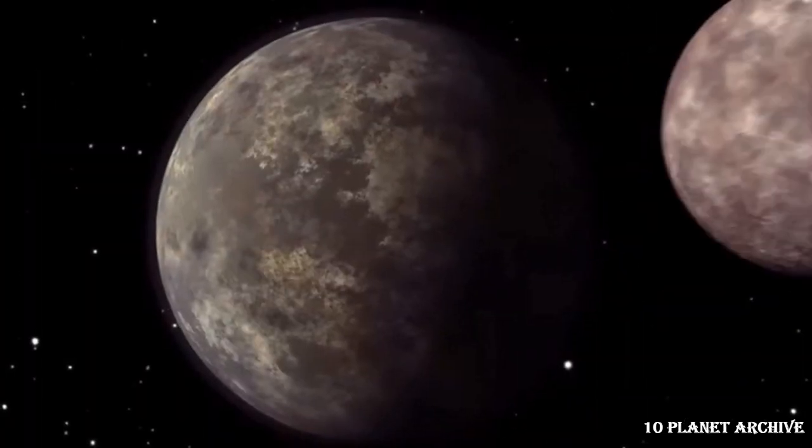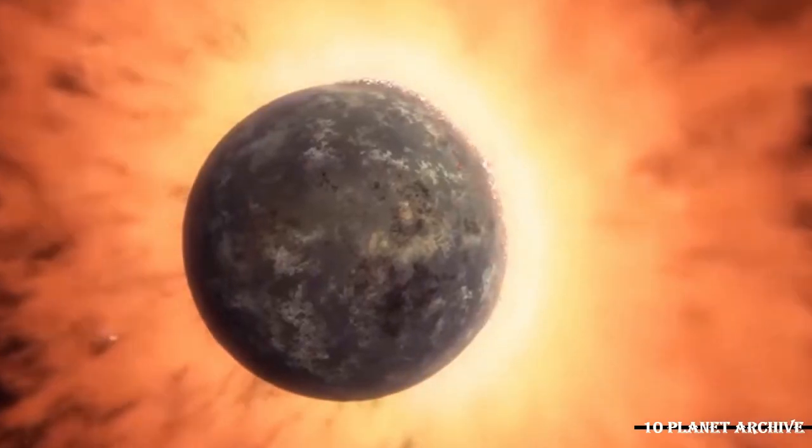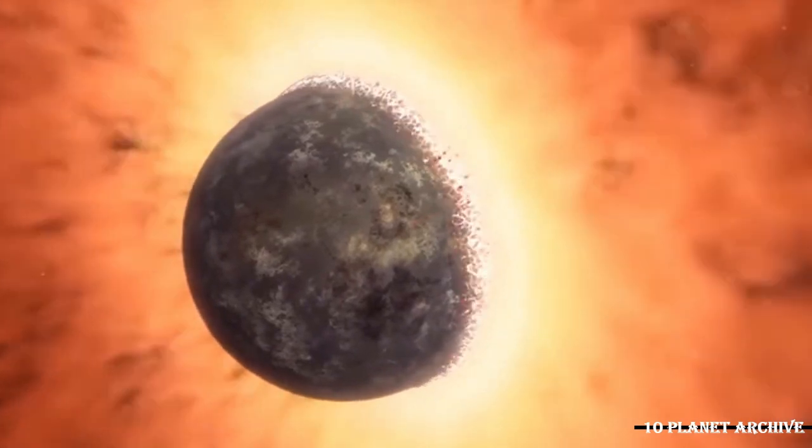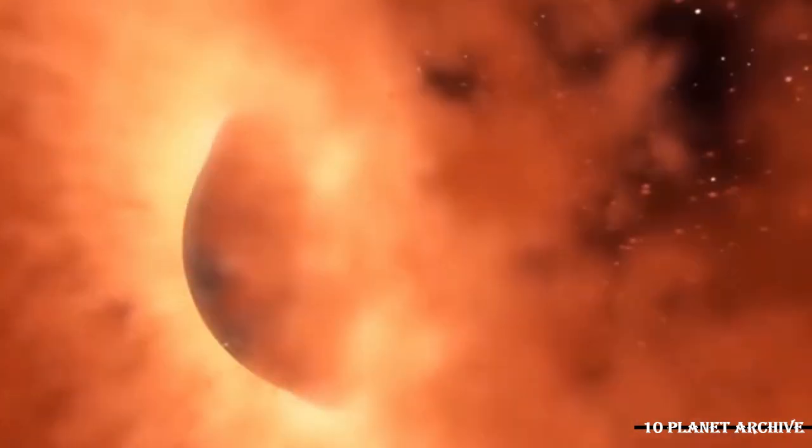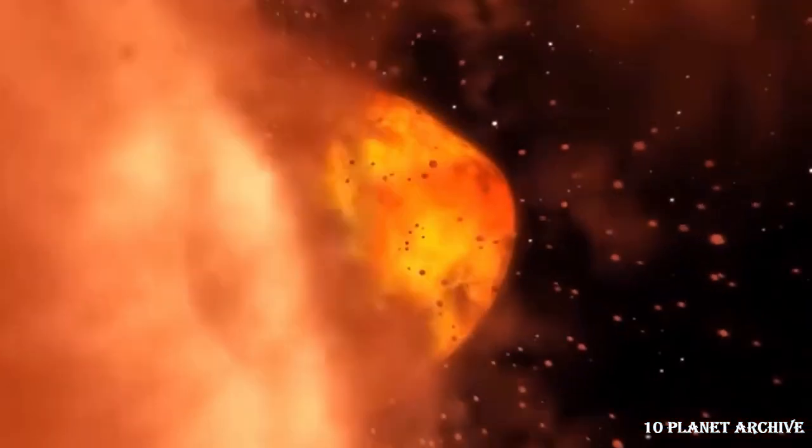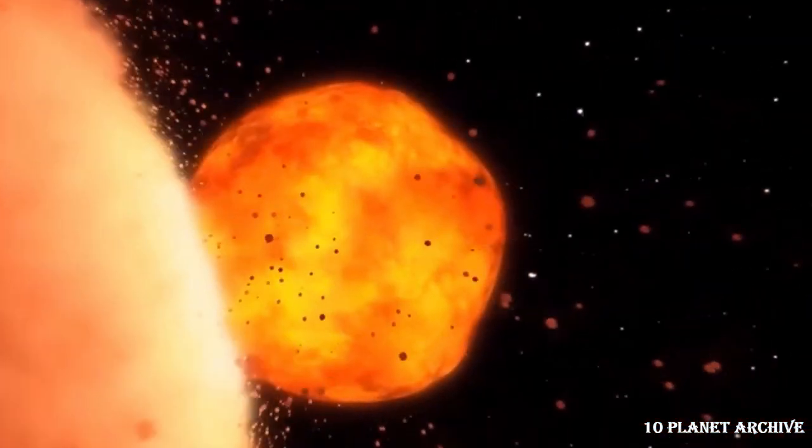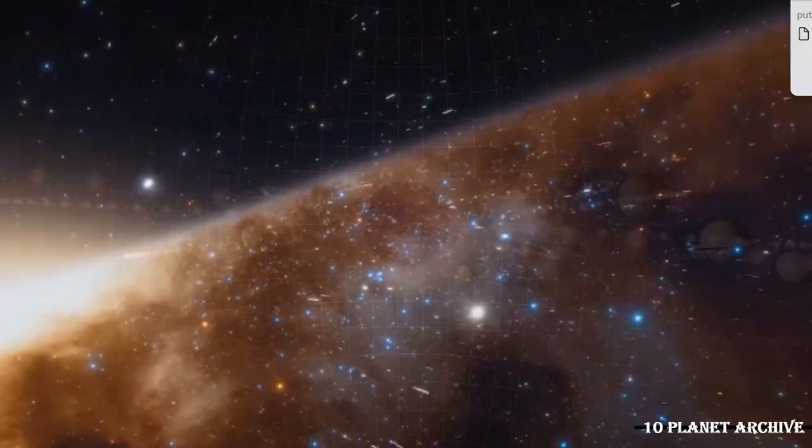Charon, the biggest of Pluto's moons, is about half the size of Pluto itself, making it the largest satellite relative to the planet it orbits in our solar system. It orbits Pluto at a distance of just 12,200 miles, 19,640 kilometers. For comparison, our Moon is 20 times farther away from Earth.